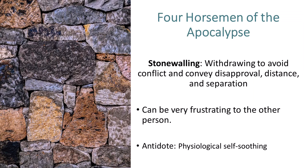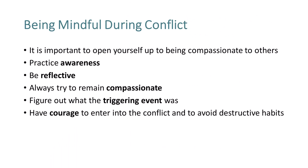Finally, we have stonewalling, which is withdrawing to avoid conflict and convey disapproval, distance, and separation. In stonewalling, you may just shut down because you're emotionally flooded — this could be stopping listening or giving the other person the silent treatment. Stonewalling, which some people call gray rock, can be very frustrating for the other person and can make them infuriated. In work conflicts, we want to avoid stonewalling as much as we can. One way to do that is physiological self-soothing: calling a timeout or taking a break from the discussion. A 20-minute break helps your body calm down physiologically, but you have to focus on soothing in this time, not raging mentally against the other person.